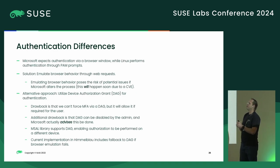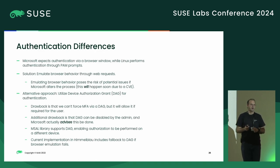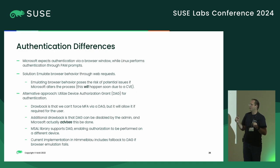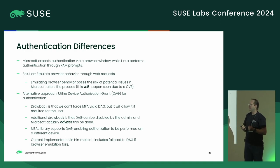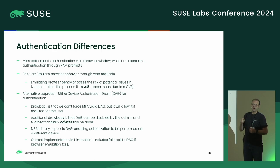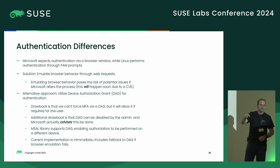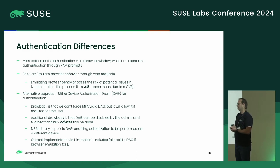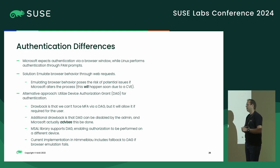An alternative approach is to use a device authorization grant or DAG — you've probably seen this when authenticating a smart TV, where it pops up and says go to this URL and enter this code. A couple of drawbacks: we can't force MFA when we do that, so we don't know if our Windows Hello token will have MFA. We'll know once we get it back and it says you don't have MFA, but we can't force it. An additional drawback is that it can be disabled by the administrator in Azure, and Microsoft actually advises that administrators disable it — so that's a problem. My current library supports DAG and it works, and Himmelblau is using it as a fallback.